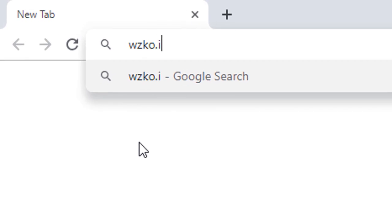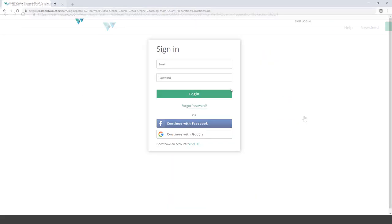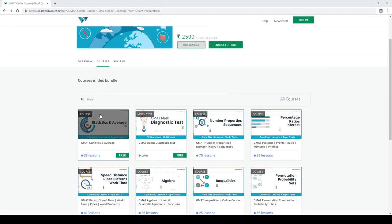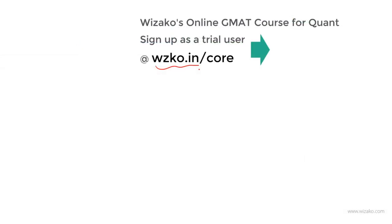Before you leave, two things. Sign up as a trial user at wzko.in/core. It's one of the most comprehensive online GMAT courses. Get started with a free topic, statistics and averages. Build momentum to your GMAT preparation. Subsequently pay up and unlock the remaining topics.